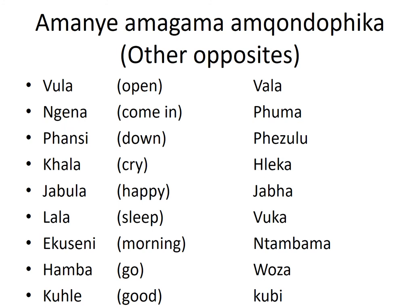As I've said, there are so many other opposites — it's not only gender, colors, or adjectives. As you can see over here, I wrote some of the words. Let us all read these Zulu words together. Vula means to open, and its opposite is vala. Ngena means to come in, and its opposite is puma. Phansi means down, and its opposite is phezulu.